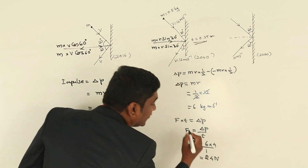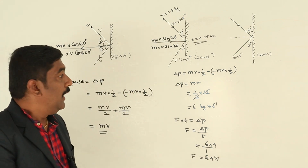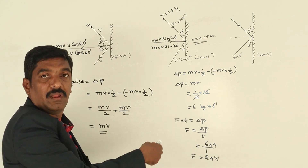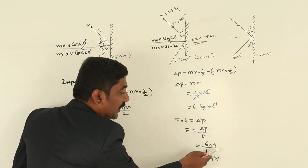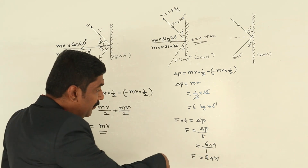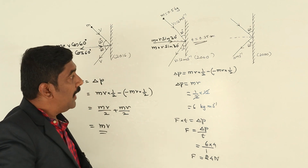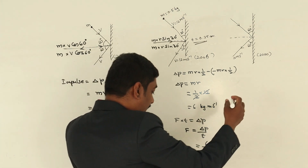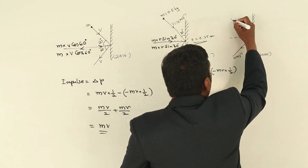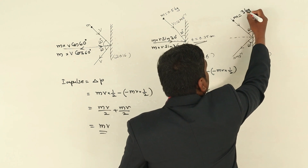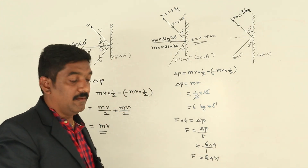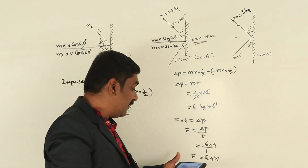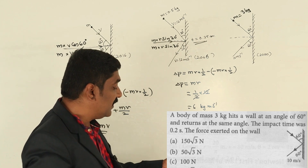24 newton is the answer. The problem simplification: 0.25 is 25/100, which is 1/4, so multiplying by 4 gives the result. Now the other problem: a body of mass 3 kg hits a wall at an angle of 60 degrees. The mass M is 3 kg and the wall angle is 60 degrees. It returns at the same angle.